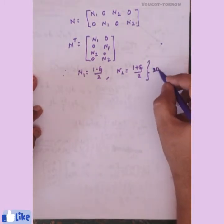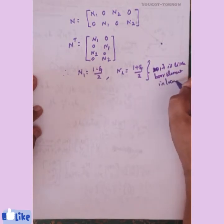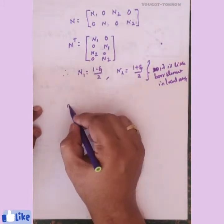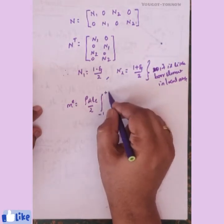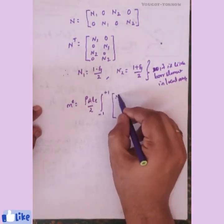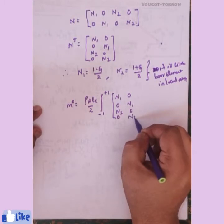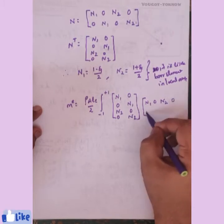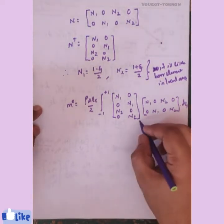In local axis, because the truss element is a 2D bar element, N1 and N2 are the same as for a bar element. Taking the previous expression, Me equals rho A Le over 2, from minus 1 to plus 1, of N-transpose times N d-zeta, where N-transpose is [N1, 0, 0, N1, N2, 0, 0, N2] and N is [N1, 0, N2, 0; 0, N1, 0, N2].